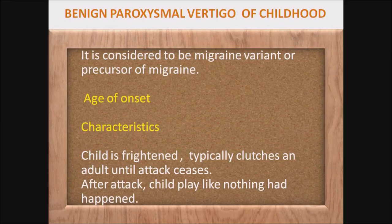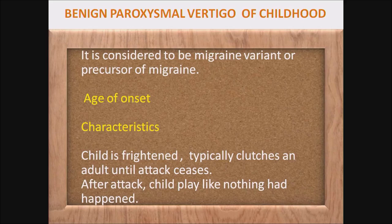Now I will talk about each disease one by one. First is benign paroxysmal vertigo of childhood. It is considered to be a migraine variant or precursor of migraine. The age of onset is generally around four years, but it may be around five to ten years. After onset, it gradually increases in frequency and then gradually decreases in severity, and it usually resolves by the age of ten years.